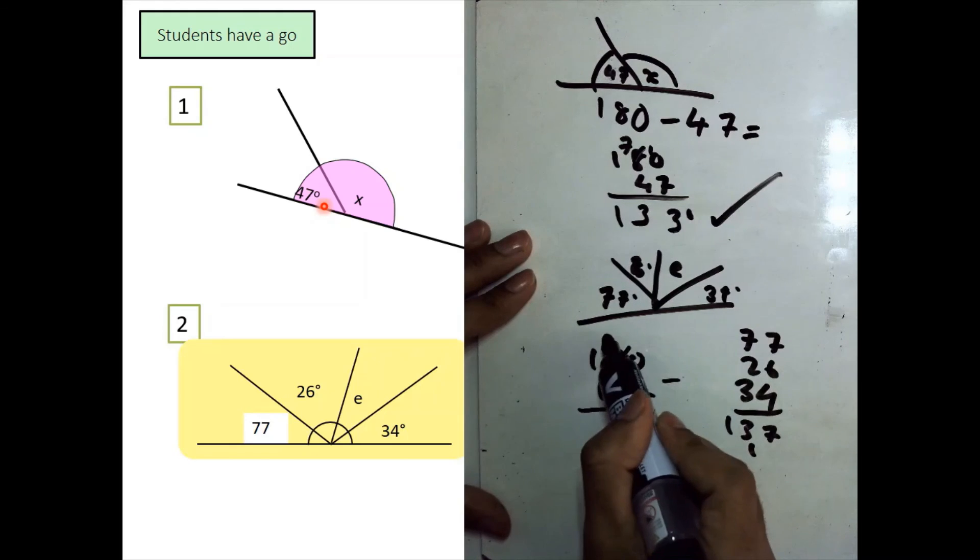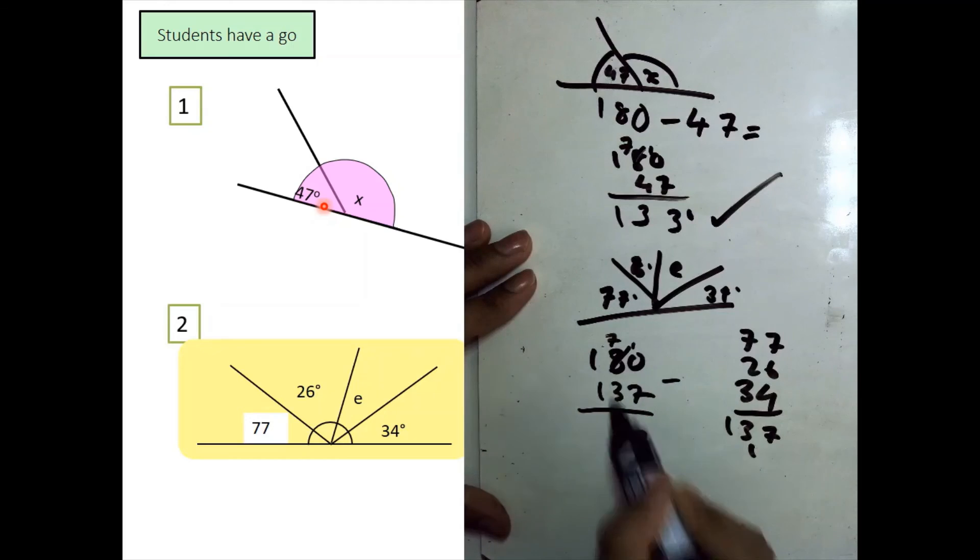This would be a fair bit easier than using the column method. 0 take away 7 we can't do. So, let's make that a 7. 10 take away 7 is 3. 7 take away 3 is... So, now that you've done a few examples for yourself, I want you to have a go at these questions.